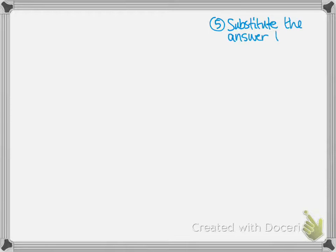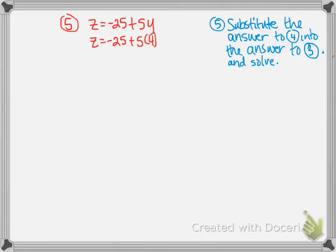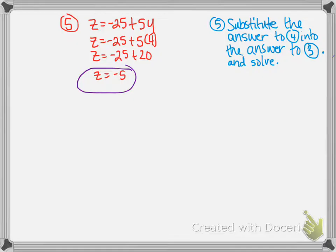Now we substitute y equals 4 into the expression we found in step 3: z equals negative 25 plus 5y. So z equals negative 25 plus 5 times 4, which is negative 25 plus 20, giving z equals negative 5. We have now solved for two of our variables — we know y equals 4 and z equals negative 5 — and we only need to find x.